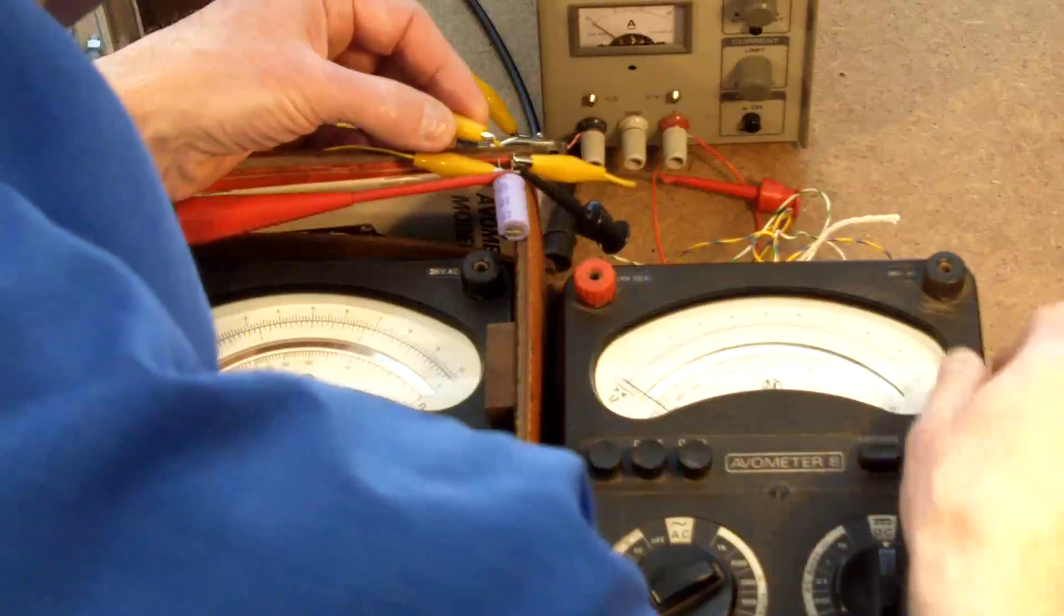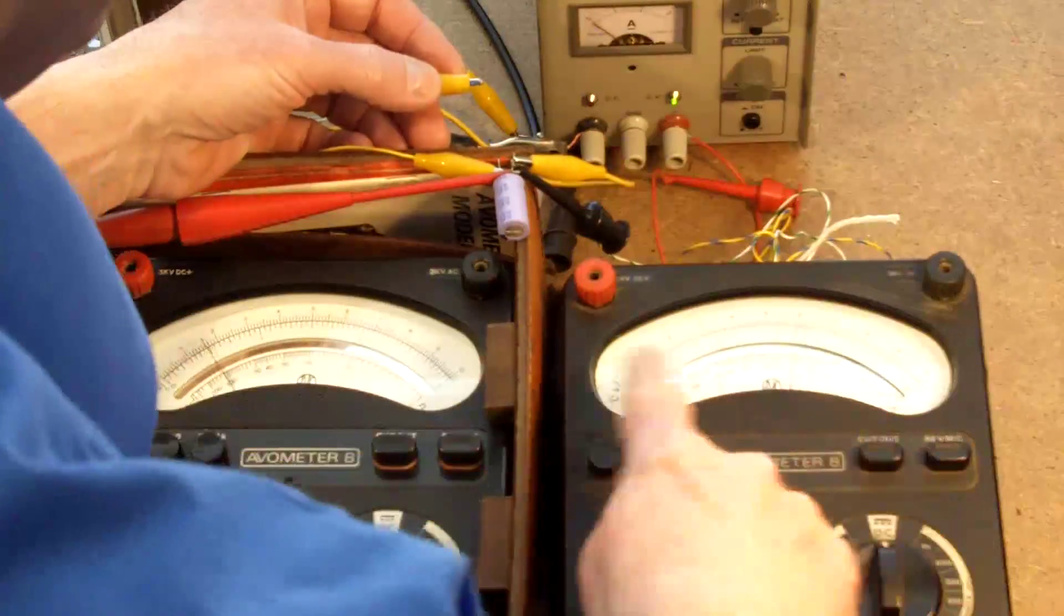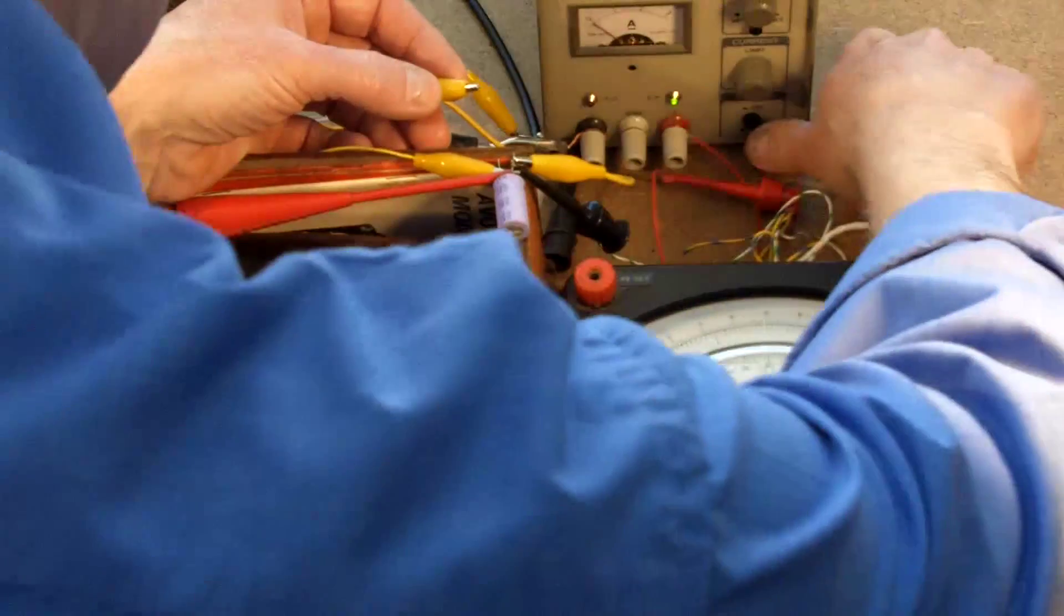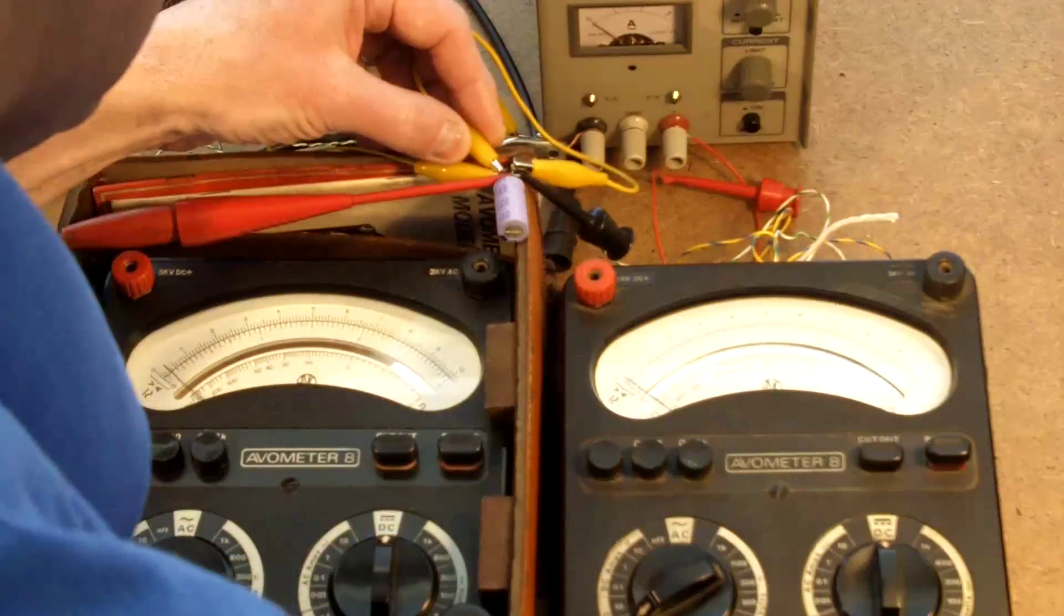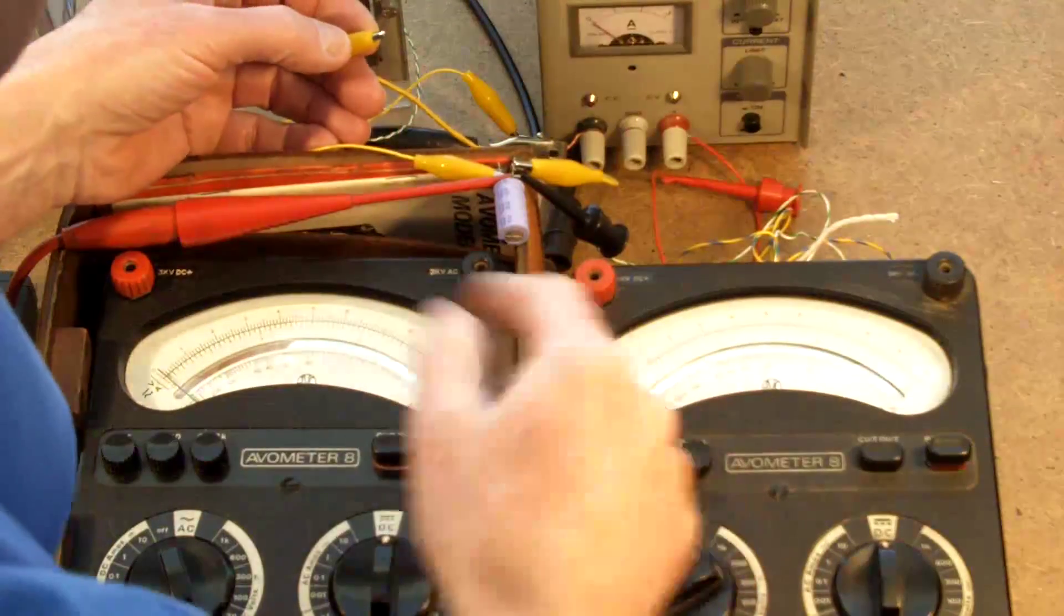So meter's in the right direction. Power on. Got the kick. Switch it off. Reverse the meter. Short it out. And the current's gone.